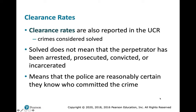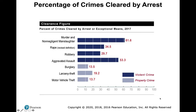Clearance rates are also reported — crimes considered solved — but this doesn't mean there's been a prosecution, conviction, or incarceration. It just means police are reasonably certain who committed the crime. You can clear by arrest or clear exceptionally. From 2017 data, murder has the highest clearance rate, followed by aggravated assault. Crimes like burglary and motor vehicle theft have very low clearance rates.